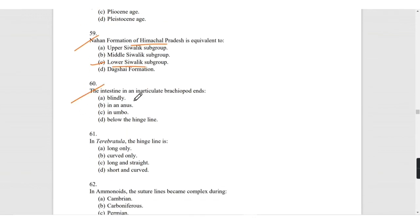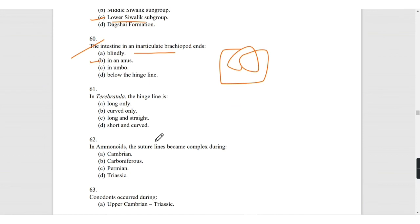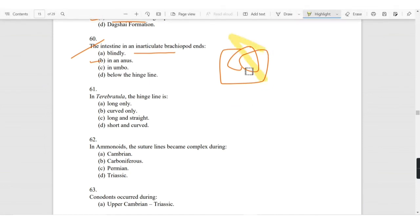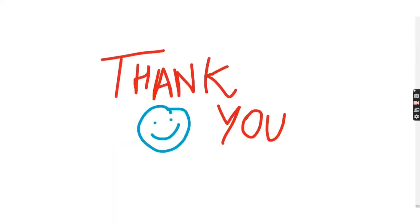The intestine in an inarticulate brachiopod ends in anus. You can see this diagram. We will see the brachiopod then tell you about it.